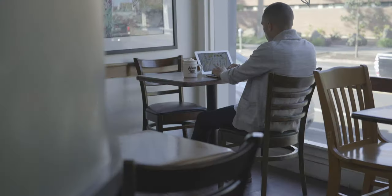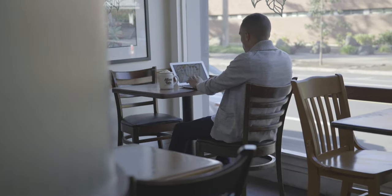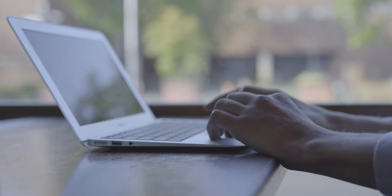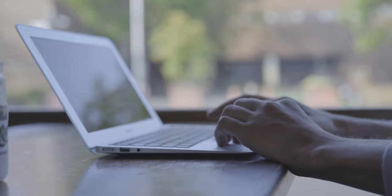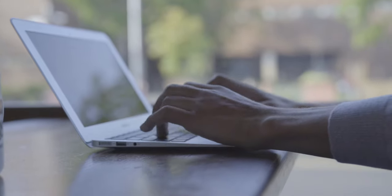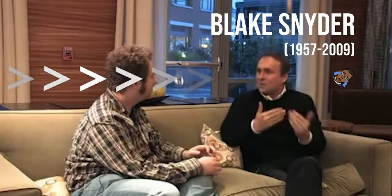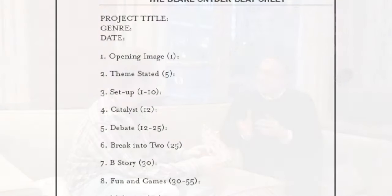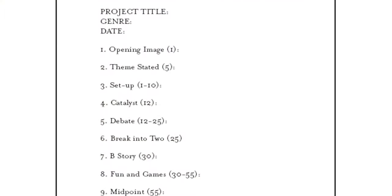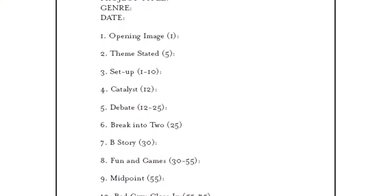By the end of this video, you are going to have a clear understanding of how to properly structure your screenplay using pen and paper or a computer. You'll learn how you can apply this to your screenplay. Screenwriting structure is the single most important element when it comes to writing a successful feature film. Blake Snyder's Beat Sheet has become the foundation for commercial contemporary cinema.